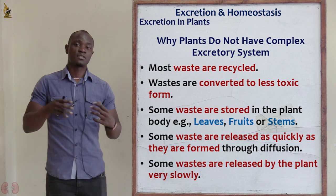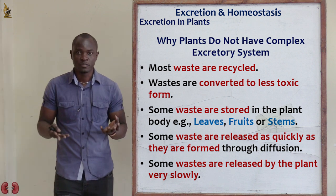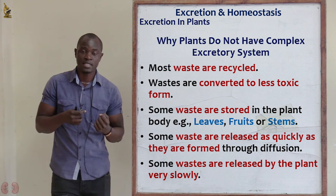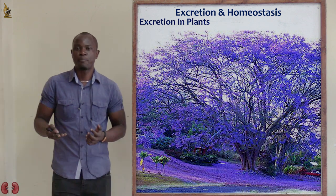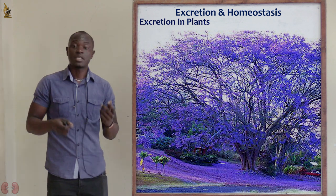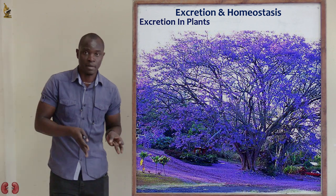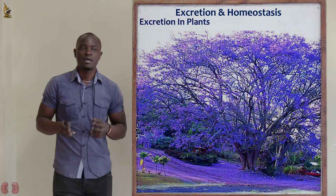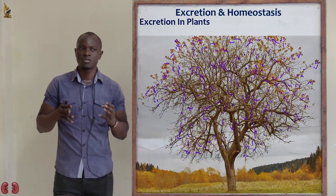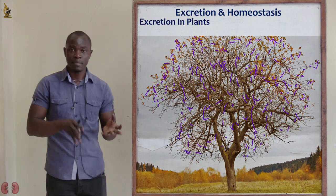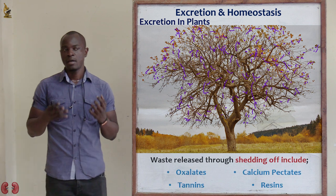Another reason is that waste products in some plants are stored for a short time and then shed off. For example, the jacaranda tree sheds its leaves during summer. Most deciduous trees also shed their leaves during summer and regain them when environmental conditions become favorable.